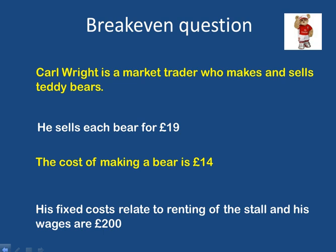This is the question we're going to use. It's about a market trader called Carl who makes teddy bears and he sells each bear for £19. The cost of making the bear is £14 and his fixed costs relating to the renting of the store and wages are £200. With this information — these three numbers — we're going to calculate the breakeven point for Carl.